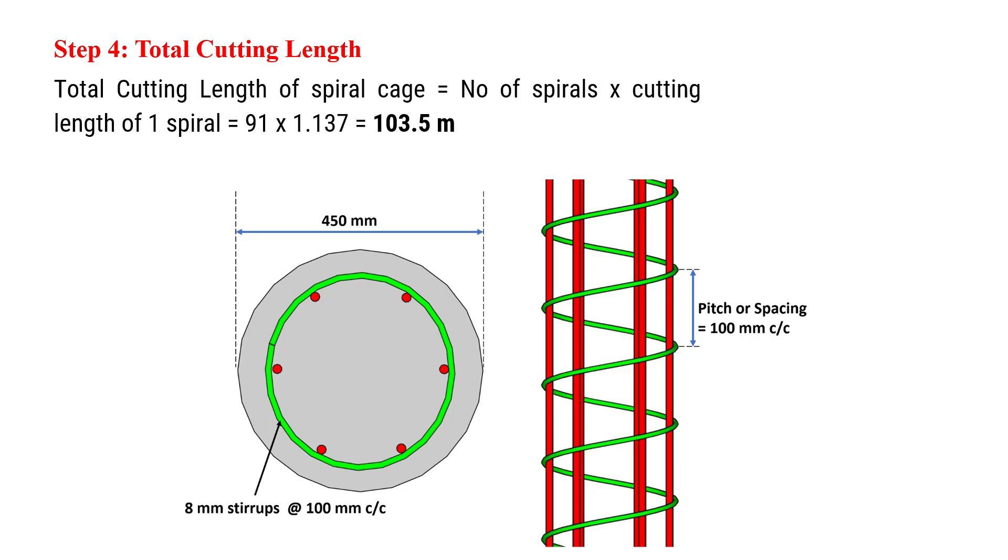On substituting these values, total cutting length of spiral cage will be 103.5 meters.